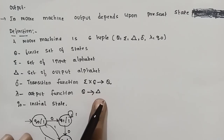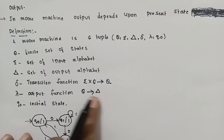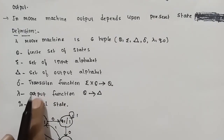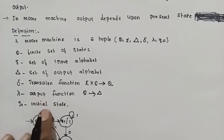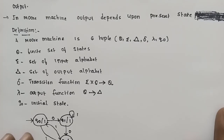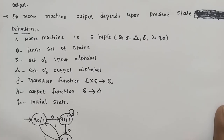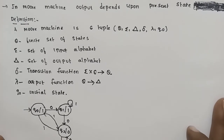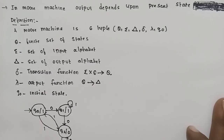So Q maps to delta. This is the lambda output function. q0 is the initial state. Here is the final state, so the final state is not the same — the final state is acceptable.